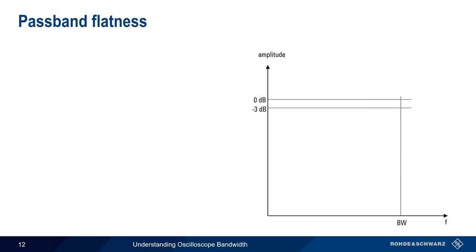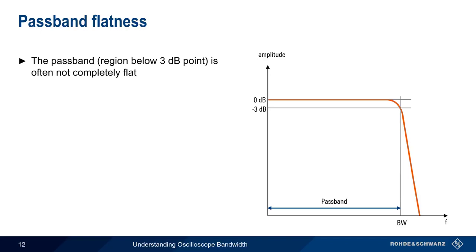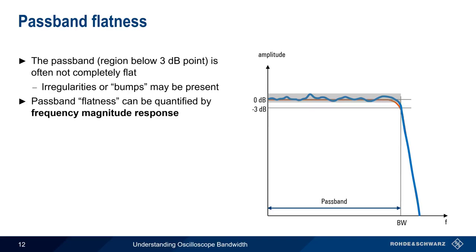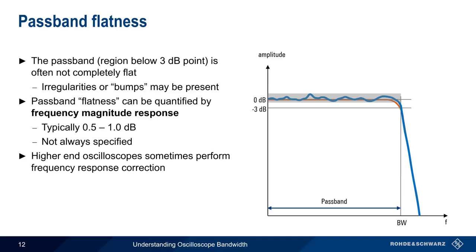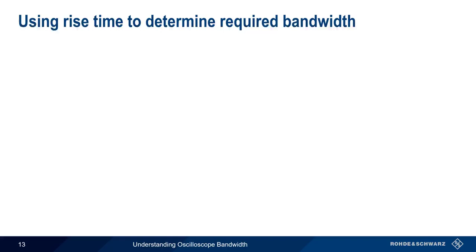One last point about frequency response. We've been showing our frequency response curves as being essentially flat in the pass band, or the region below the 3 dB bandwidth frequency. However, the pass band often is not completely flat, but may have various bumps or irregularities. We can quantify this using a term called magnitude frequency response, which is a measure of how much the actual pass band deviates from an ideally flat pass band. Typical values are about ½ to 1 dB, although these values are not always specified by manufacturers. Some higher end oscilloscopes have a frequency response correction function that uses digital signal processing to smooth out the irregularities in the pass band.